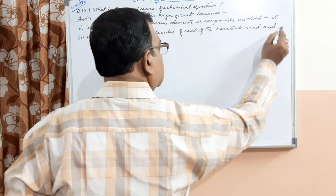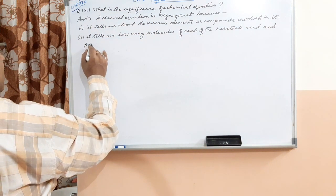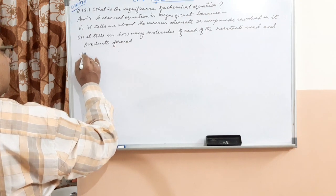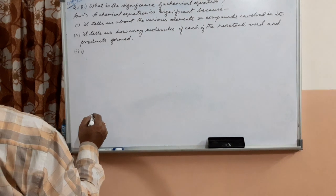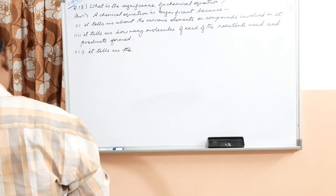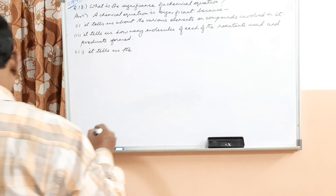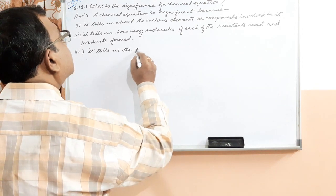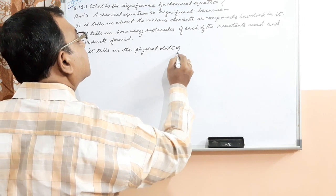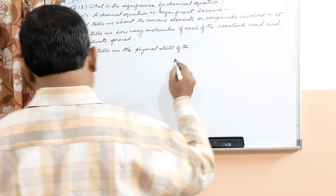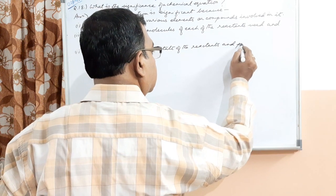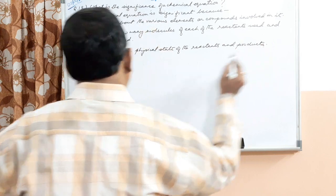A chemical equation is significant because it tells us about the reactants used and products formed in the reaction.